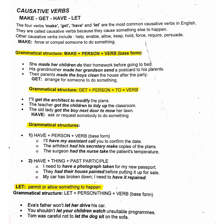Have plus thing plus past participle. Examples: I need to have a photograph taken for my new passport. They had their house painted before putting it up for sale. My car has broken down — I need to have it repaired.